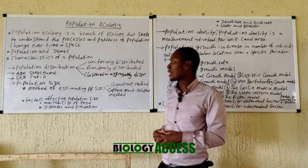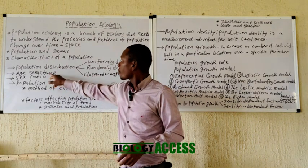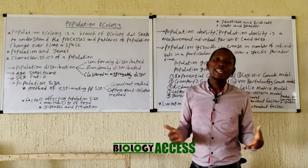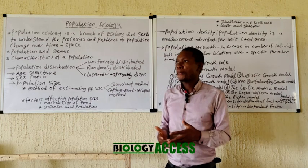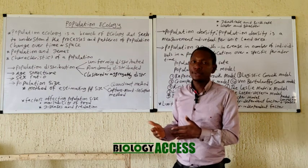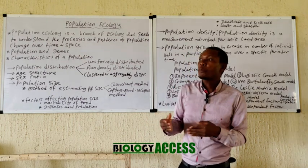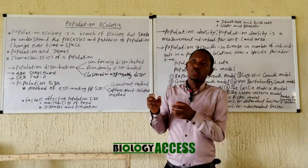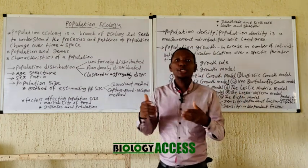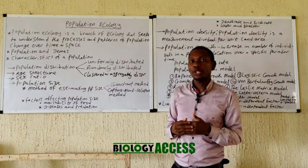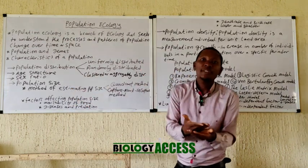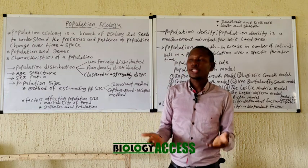The next characteristic is age structure. Age structure has a great influence on population — it determines how a population grows. For example, in an aging population where the older age group is more in number, this may actually lead to a decrease in population. In some populations, the age structure may indicate that reproductive age is dominant, which may actually lead to an increase in population.